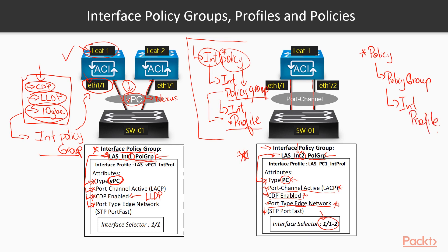Before we can configure a VPC type of interface, we have to build a virtual VPC domain in ACI so that the two leaves can allow member VPC interfaces. We have to configure a virtual port channel domain first, and then we're going to configure the attributes and build the VPC.